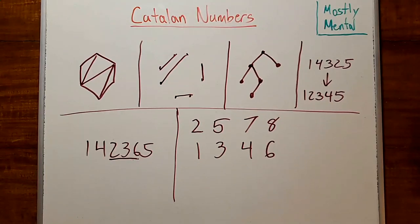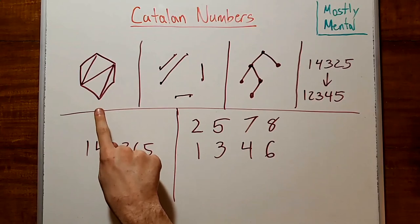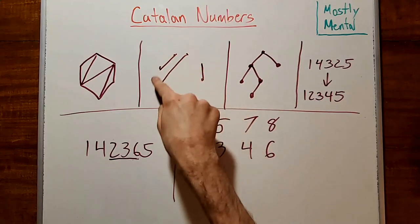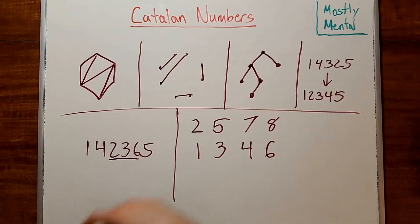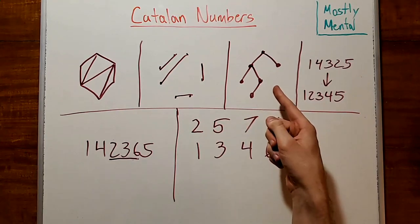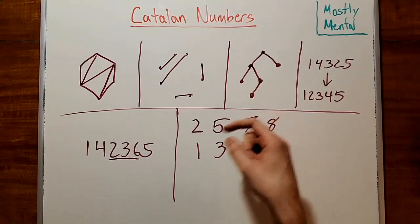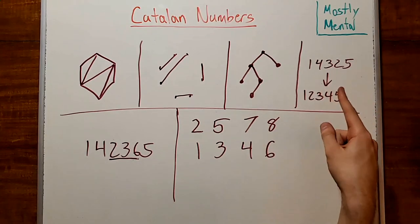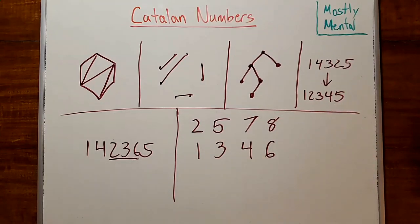Earlier I said there were lots of other things that the Catalan numbers count. Let's take a look at some examples. If you've got a convex polygon with n plus 2 vertices, there are C sub n ways to draw n minus 1 diagonals to cut it into triangles. Alternatively, if you have 2n points arranged in a circle, there are C sub n ways to connect them in pairs without any intersections. If you're a computer scientist, you've probably seen binary search trees. It turns out there are C sub n distinct shapes that a binary tree with n nodes can make. And there are also C sub n sequences that can be sorted in one pass using only a single stack for auxiliary storage.